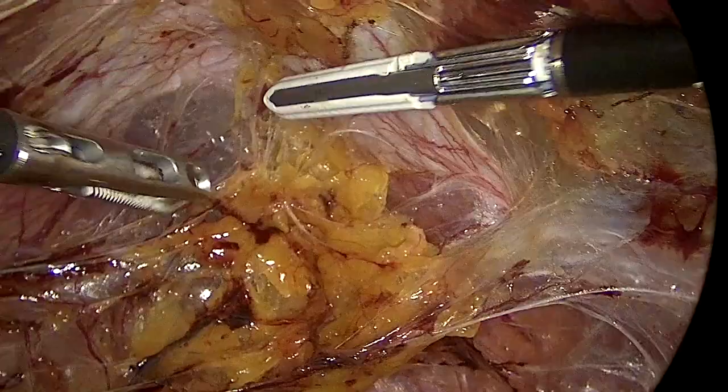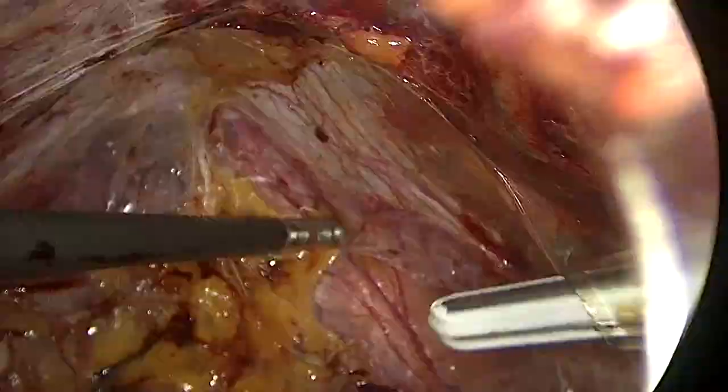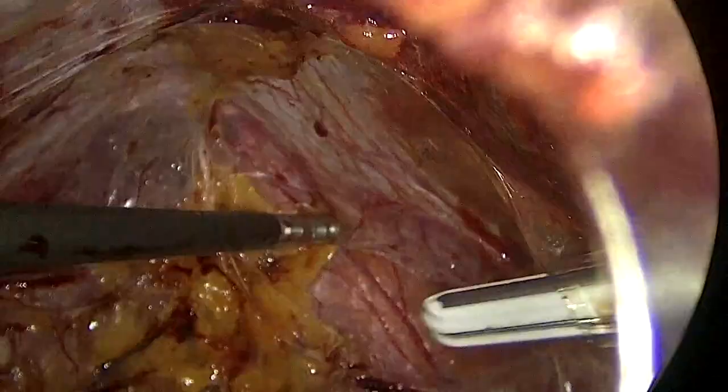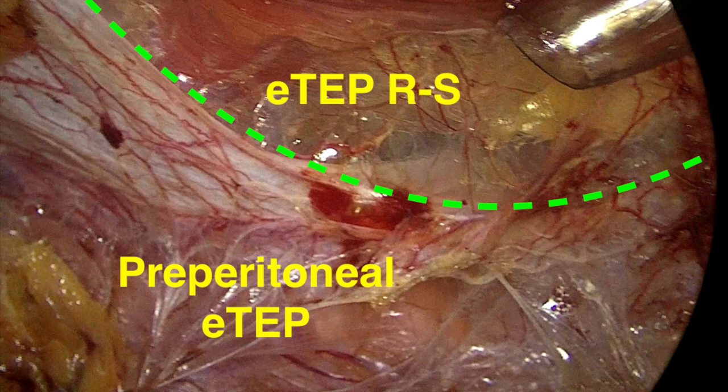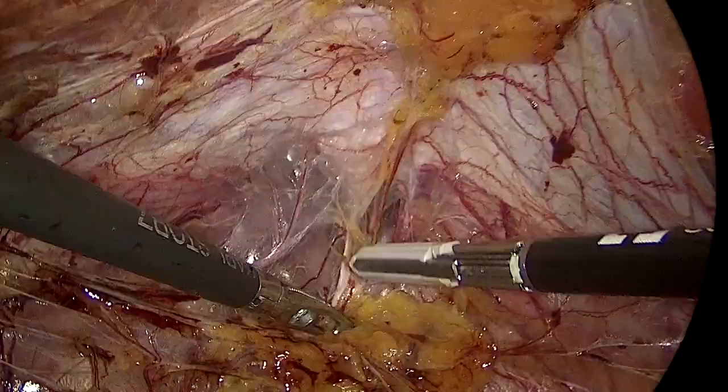Here you're going to see a very nice demonstration of the planes of dissection. You see the posterior rectus sheath, the arcuate line, the area where you would go if you want to do a typical REPSITOPA, and the area where one goes when doing preperitoneal ETEP.